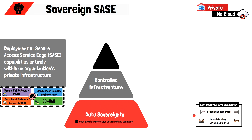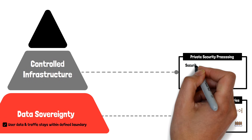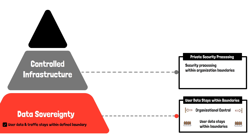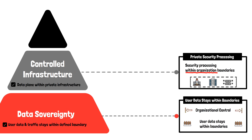The second pillar is that all data plane processing and user data is completely within the organization's infrastructure or boundary. Unlike traditional SASE models where security inspection happens in the vendor cloud, in Sovereign SASE the inspection and policy enforcement happens within private POP locations. This could be an organization's own data center, co-location, or even rented hardware — but the key point is the organization controls who has access to the infrastructure and exactly where data resides.